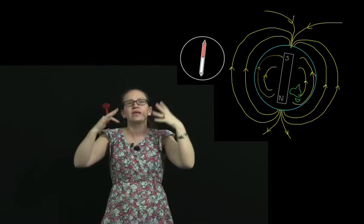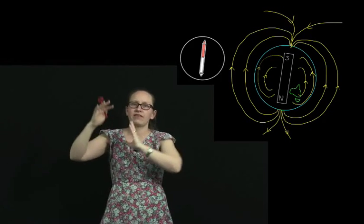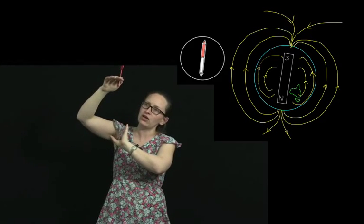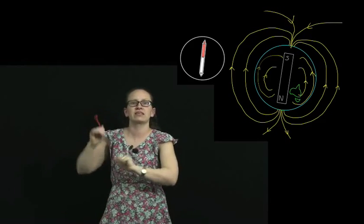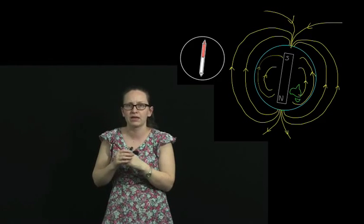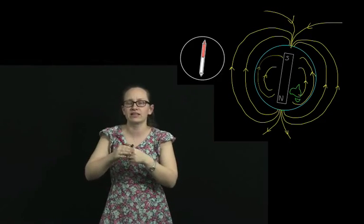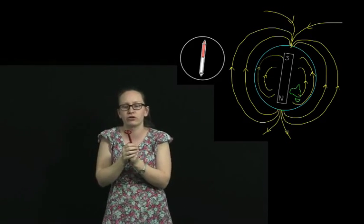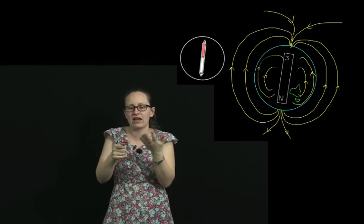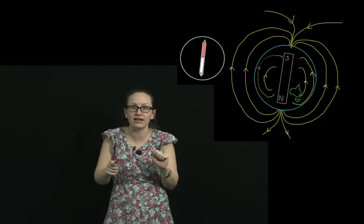And so we can imagine the Earth as having a bar magnet with a south pole up near the north pole of the Earth and a north pole down near the south pole of the Earth. And the magnetic field lines actually come out in three dimensions around the sphere as we've drawn.